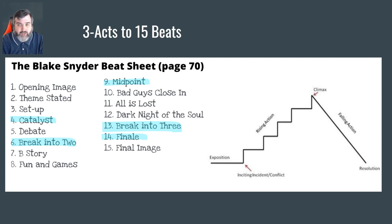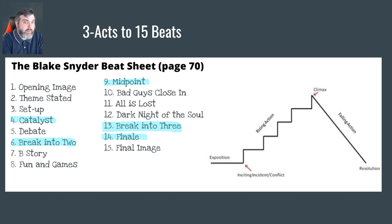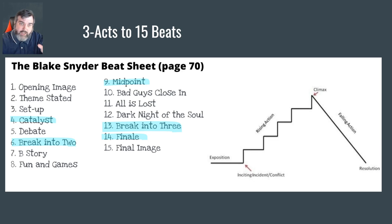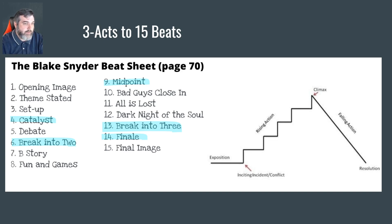A lot of TV shows are done in three acts because of commercial breaks — you do about five or ten minutes, take a commercial break, do five or ten more minutes, another break, come back five or ten minutes, and the show's done. Three acts works for a lot of different things. Usually you have the introduction and build things up, the main story happens, and then the climax and it crashes down.